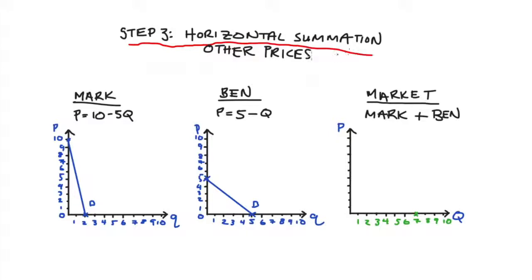In step 3, now that we have the horizontal sum for prices equal to 0, we're going to continue to do this for the other important prices. The easy way to do this is to take notice of the vertical axis intercepts for each individual and horizontally summate at those points. Let's mark those prices on the market diagram. These are going to be our two special prices. We're going to start with summating at that lower price first and it's useful to draw a line across at that point.